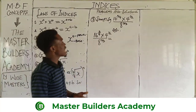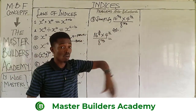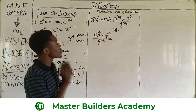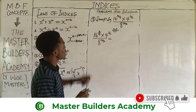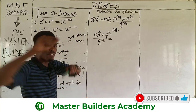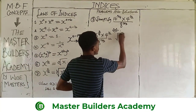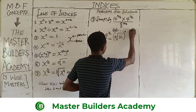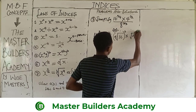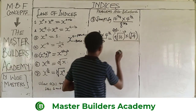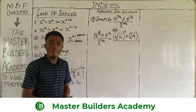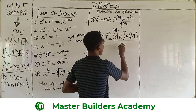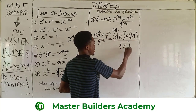I can decide to solve the numerator individually. For 16 raised to power 3 over 4, this obeys the seventh law of indices — fractional power — which gives us the fourth root of 16, all raised to power 3. Multiplied by the square root of 4, all raised to power 1. At the denominator, we also apply rule number seven: create the root, put 8 outside, the root index becomes the denominator and the numerator becomes the power.